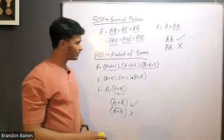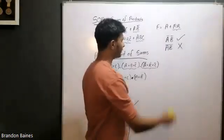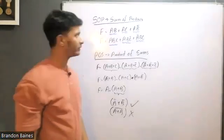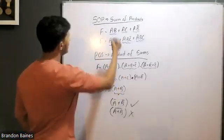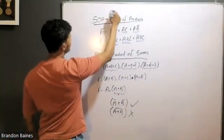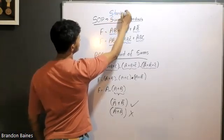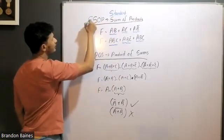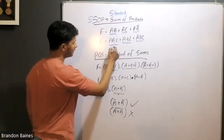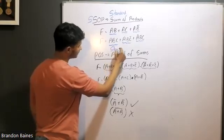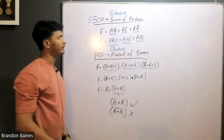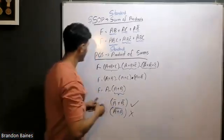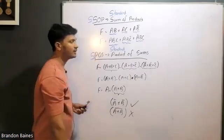We'll discuss the standard Sum of Products — the standard form of a Boolean expression. SOP stands for Standard Sum of Products. SSOP is Standard Sum of Products and SPOS is Standard Product of Sums. SPO means standard form.